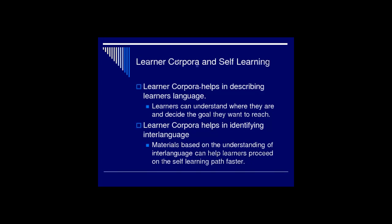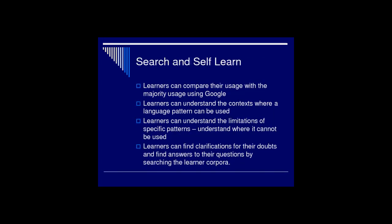Now we are coming back to our main topic: learner corpora and self-learning. How do they go together? Learner corpora helps in describing the learner's language — so what are their needs? How do you identify that? First you have to describe the language that the learner is speaking. What is the interlanguage? What kind of interlanguage has the particular learner developed? Once you identify that, you can identify their needs and show them materials that will be useful to them.